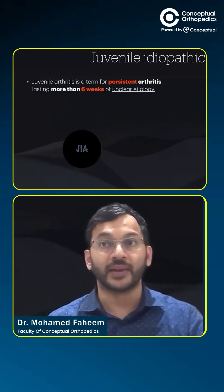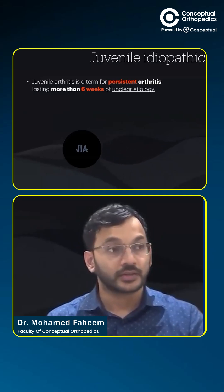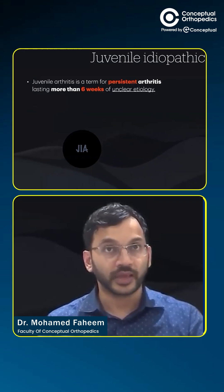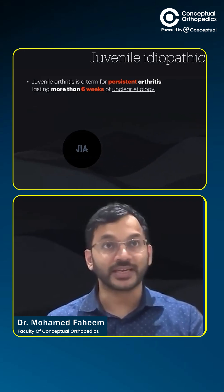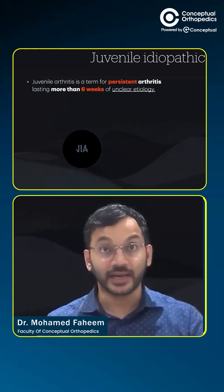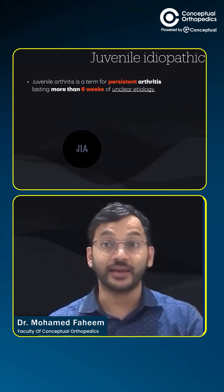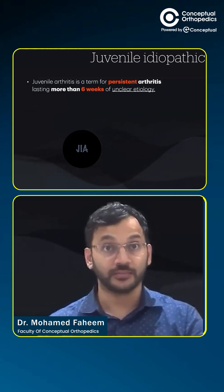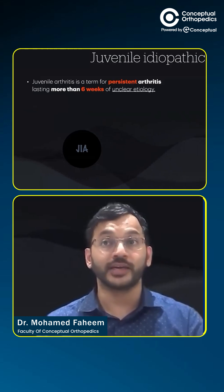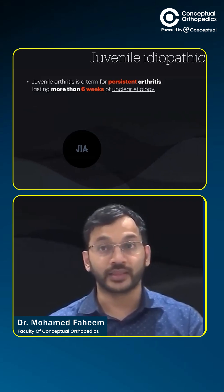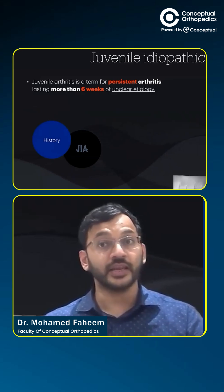Understanding this complex syndrome: Juvenile Arthritis is a term for persistent arthritis lasting more than six weeks of unclear etiology. To diagnose or to call it Juvenile Idiopathic Arthritis, we need a good and detailed history.